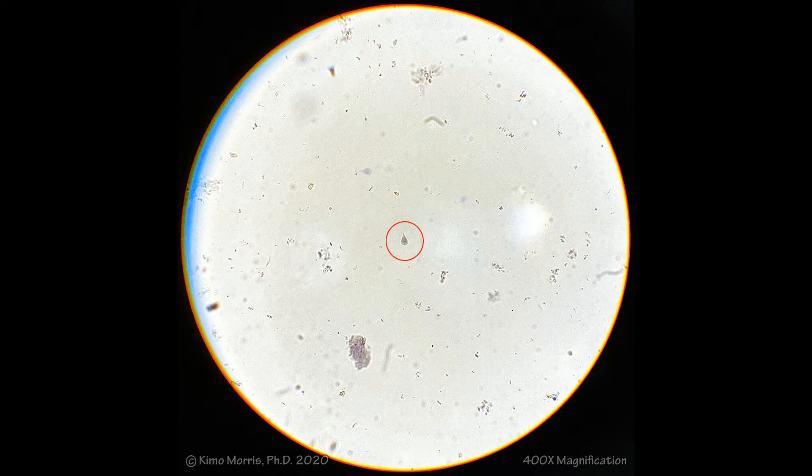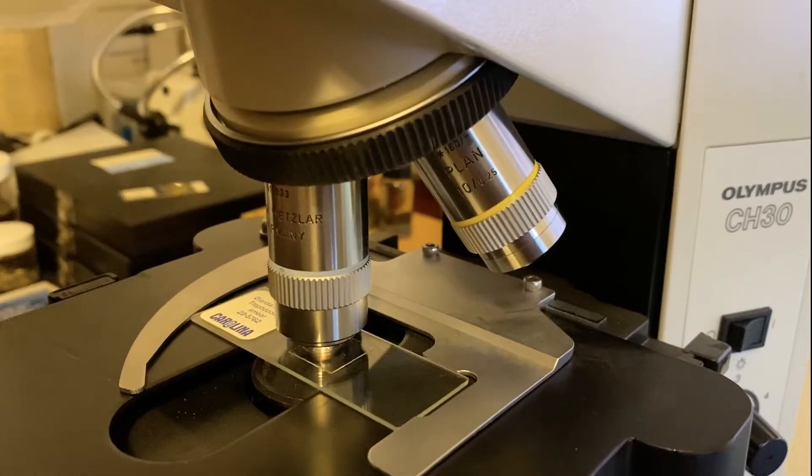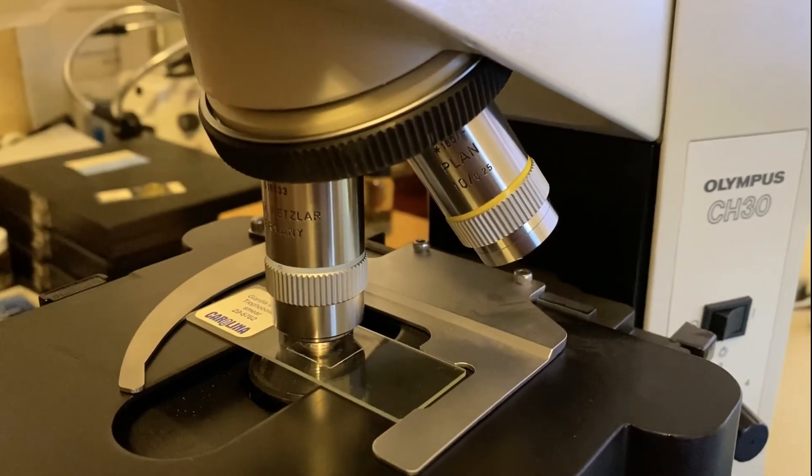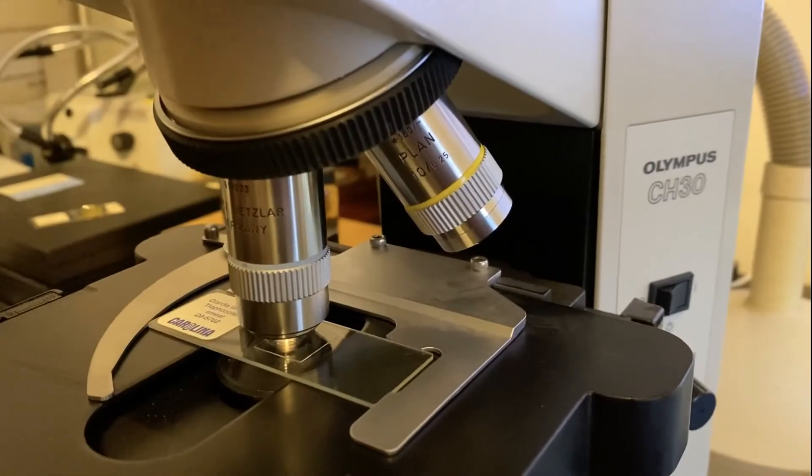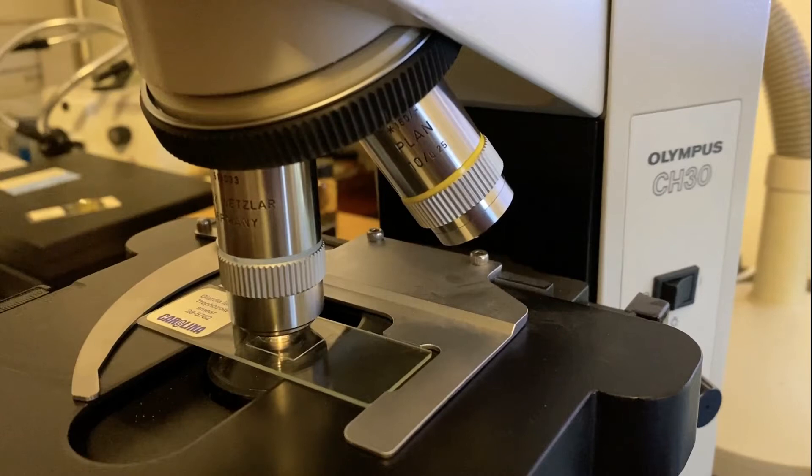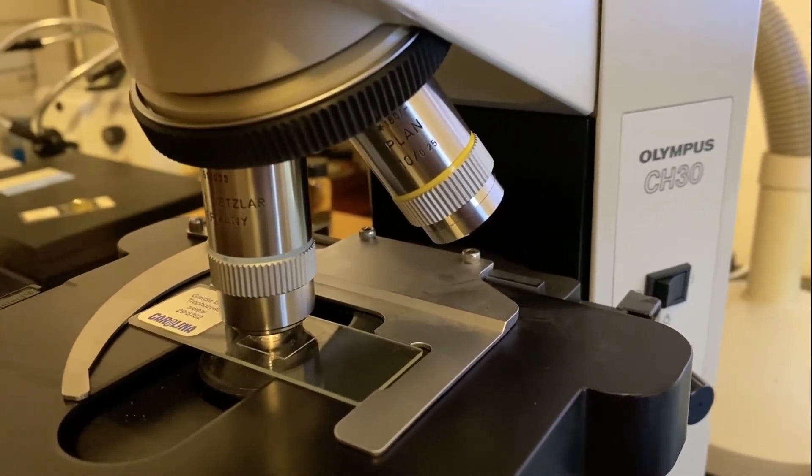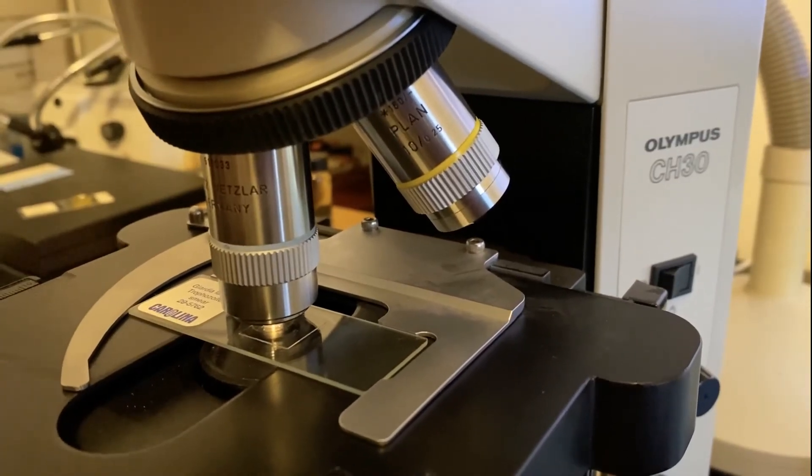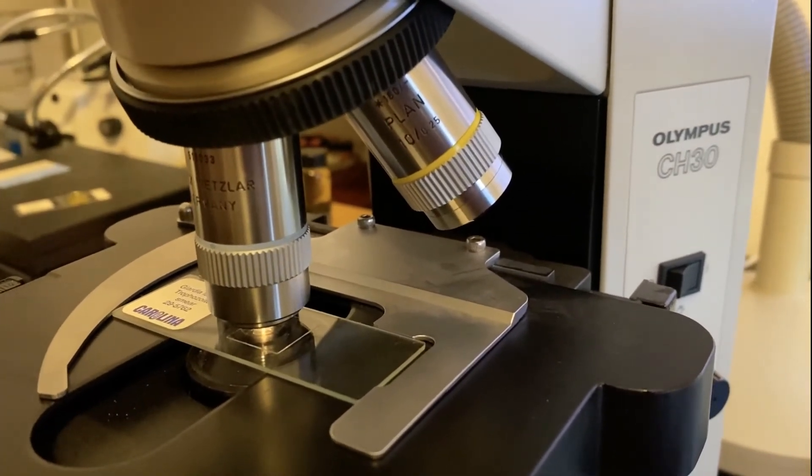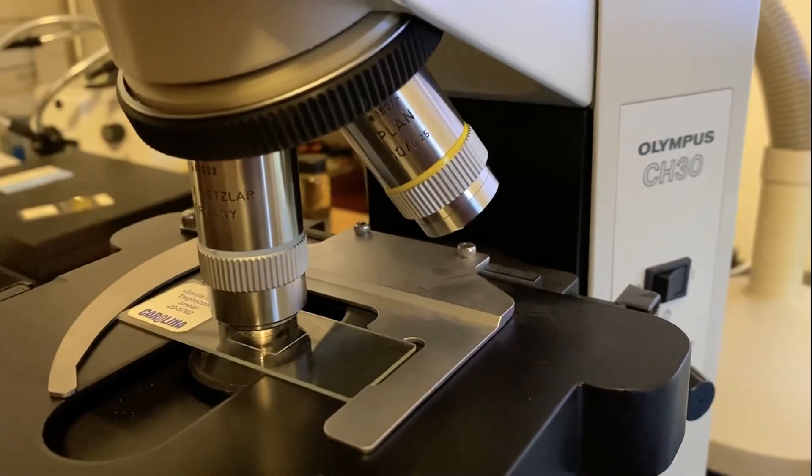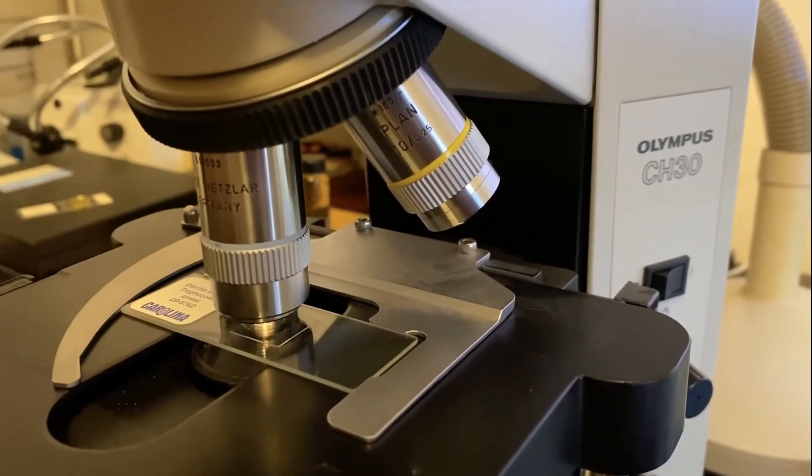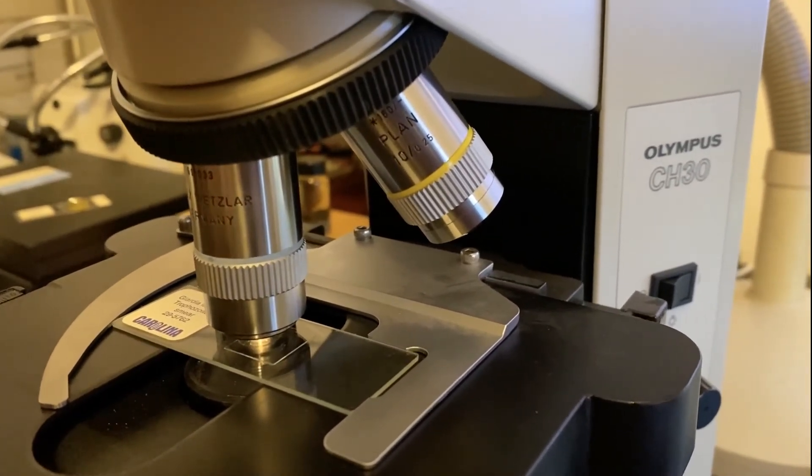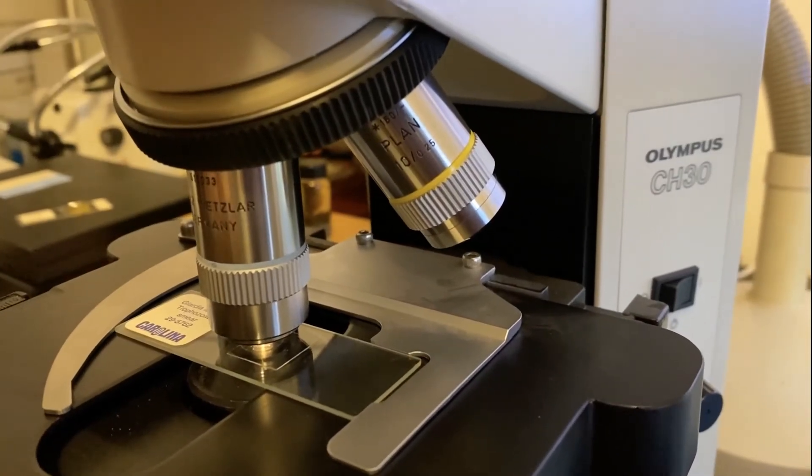So here is where the oil immersion comes in. Under this current magnification, we're pretty close to the limit of what we can see. If there is an air space between the lens and the slide, if we're going to go to a higher magnification, we actually have to place oil in the way of the lens and the slide so that we can essentially move the air out of the space.